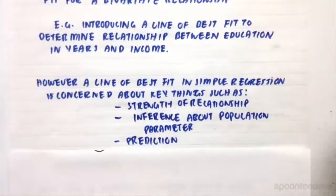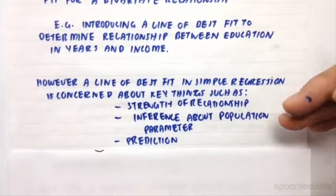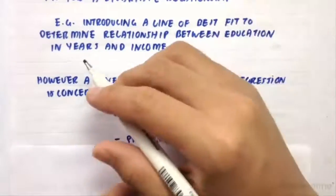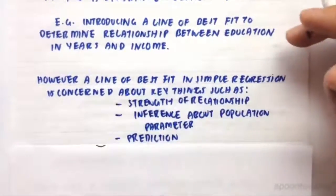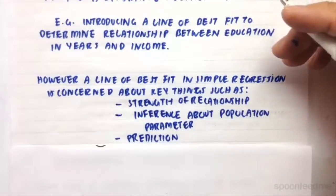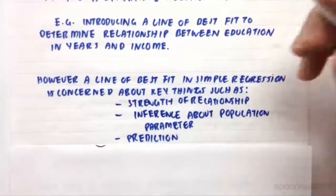It could be for an inference about the population parameter. So for example, the population parameter for a marginal increase in education years. So for example, if I study for an extra year, how much more income would I receive as a result of studying that extra year according to the line of best fit?